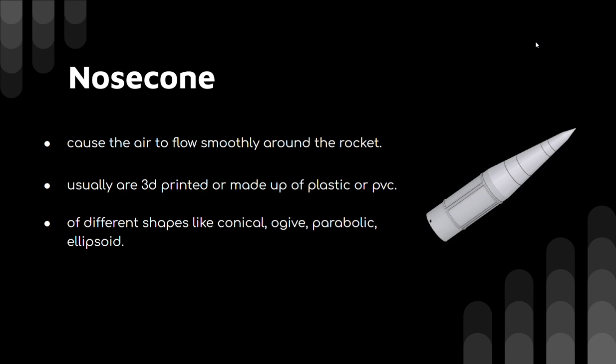Nose cones come in a variety of shapes — conical, ogive, parabolic, and ellipsoid. These different shapes give a variety of different aerodynamic resistance values. We encourage you to explore these shapes on the web and see how they give different properties to the rocket.